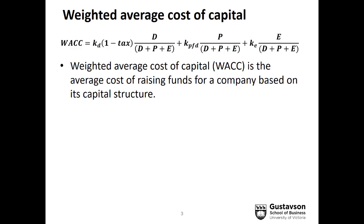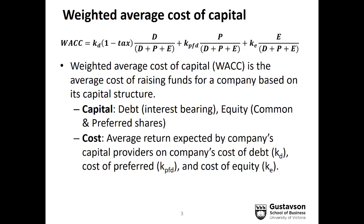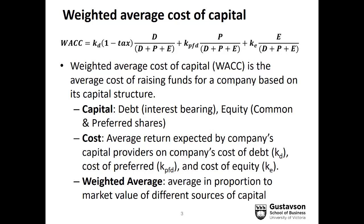Here's the formula for the weighted average cost of capital. As you can see, it includes debt, preferred shares, and common equity, where the cost of each is what it will cost the company going forwards to issue new debt, new preferred, and new equity. By weighted average, we mean that each of those costs is going to be weighted in their proportion to the company's capital structure using their market values.